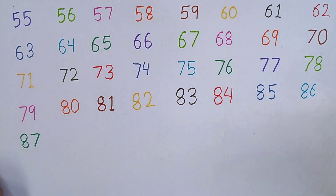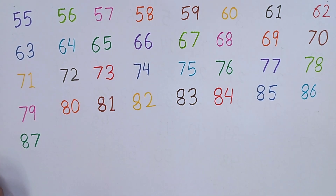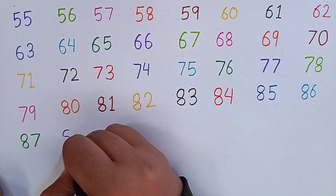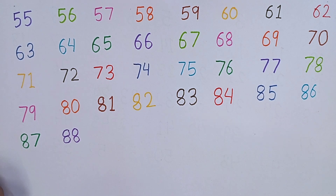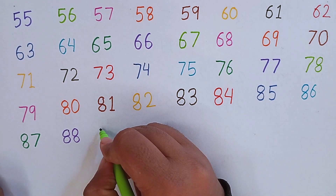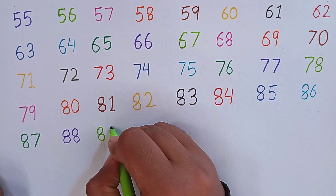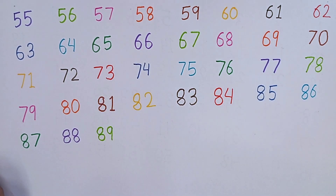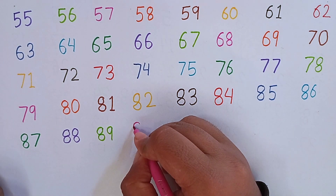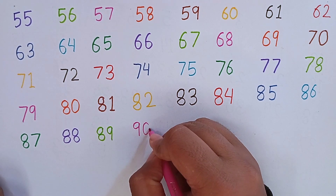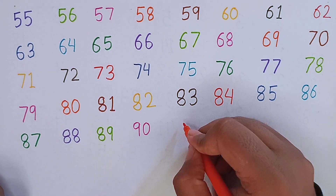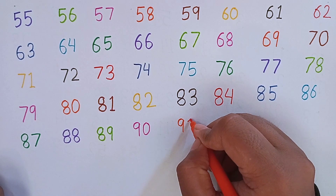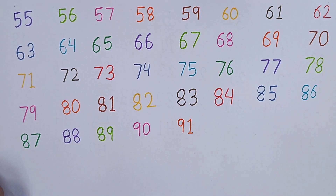After 86, I am going to write 87. 8, 7 — 87. This is 87. After 87, I am going to write 88. 8, 8 — 88. After 88, the next number will be 89. Then 90. 9, 0 — 90. Again, repeat with me: 87, 88, 89, 90. Then 91. 9, 1 — 91.